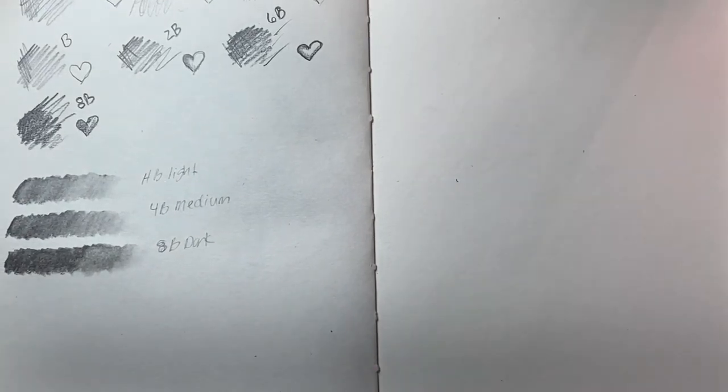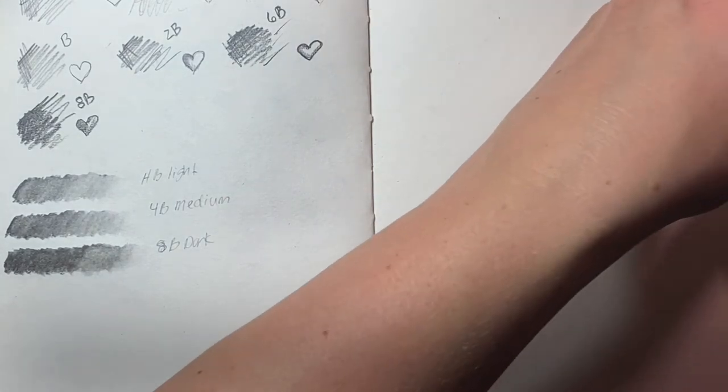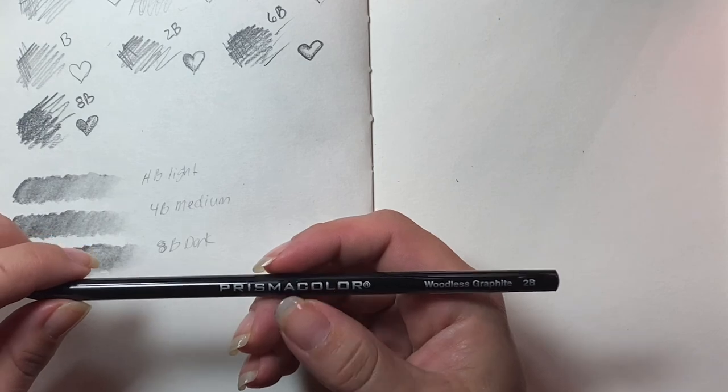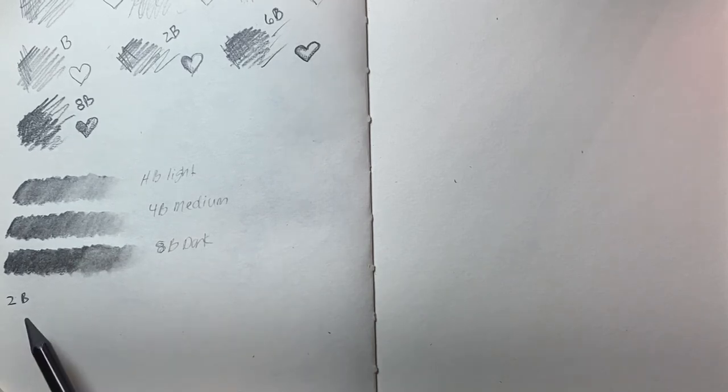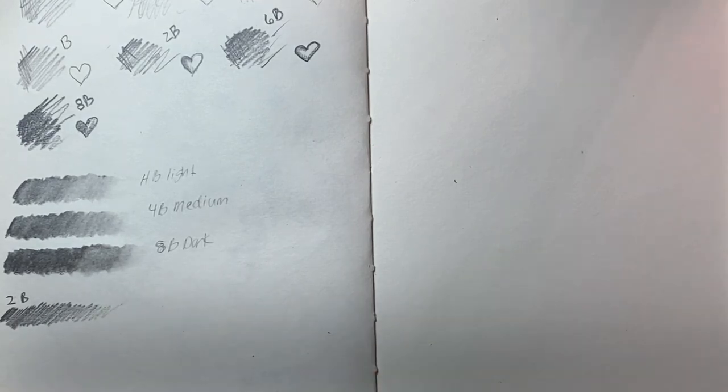Okay last but not least I'm gonna do the woodless graphite pencils. And these are all B leads. So these are definitely gonna be for like some really heavy shading. This is woodless graphite and 2B. 2B oh my gosh that's gonna be crazy. Okay so there is that gradient for the 2B.